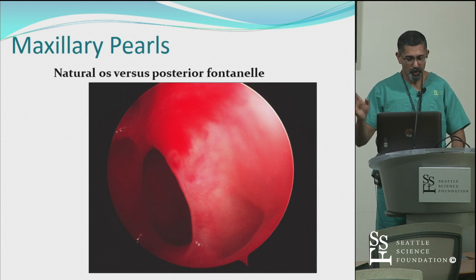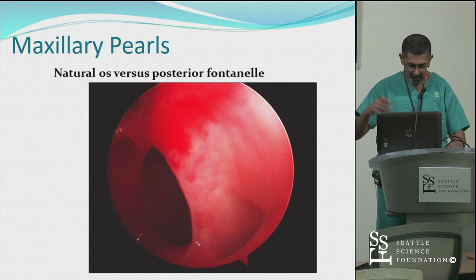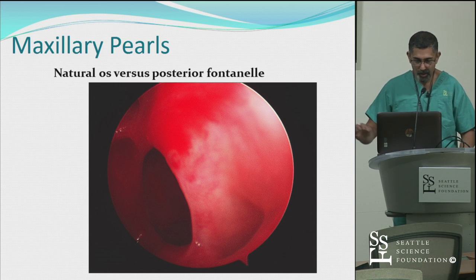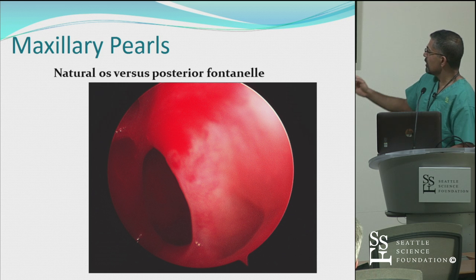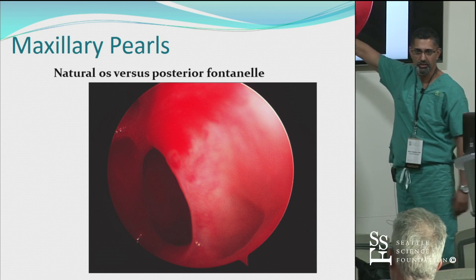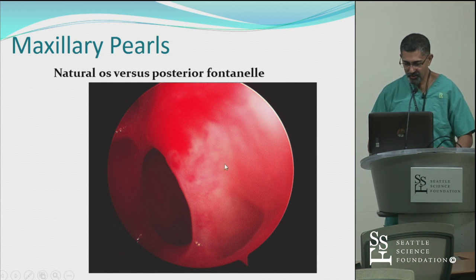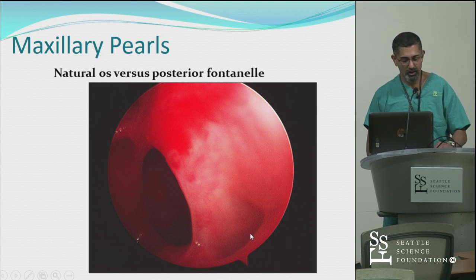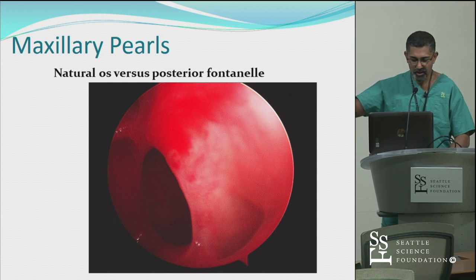I'll end with some talk about the maxillary. I don't use the balloon for the maxillary much. This image shows something very important: a patient who had surgery before, but the maxillary antrostomy was done in the wrong space — this patient had a posterior fontanelle-otomy. The actual natural ostium is up here, and this picture nicely illustrates how the posterior fontanelle sits in a sagittal plane, whereas the natural ostium of the maxillary sinus is at a different angle.